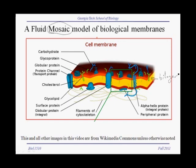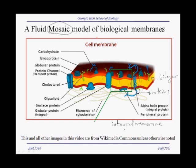Within the bilayer, we have a number of different components, of which the most important are proteins. Some proteins go all the way through the lipid bilayer from one side to the other, and these are called integral membrane proteins. The part of the protein that's embedded in the membrane is an integral membrane domain, and if the part of the protein goes from one side all the way across to the other, then that is a transmembrane domain.